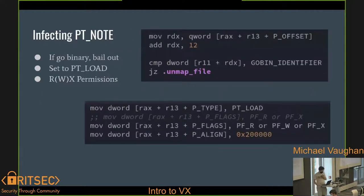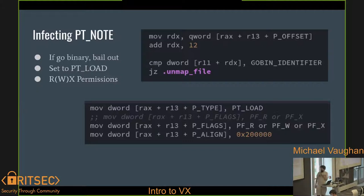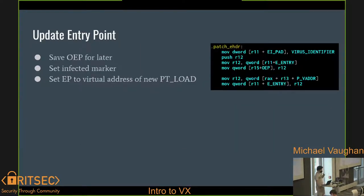Once all our code is added, we update the ELF header to change the entry point. We grab the e_entry field, save it, and then the virtual address — wherever we told it to load our code — is where our code lives. We update the entry to point there, and we jump there and have a fun time.